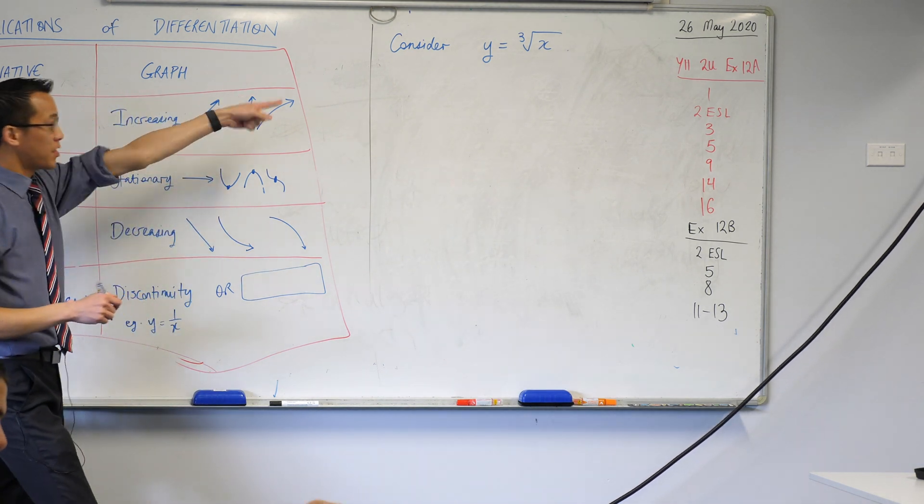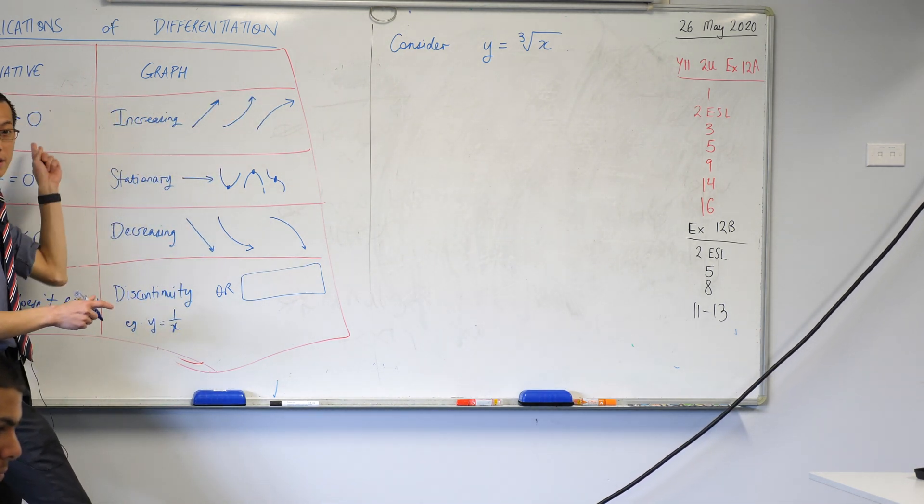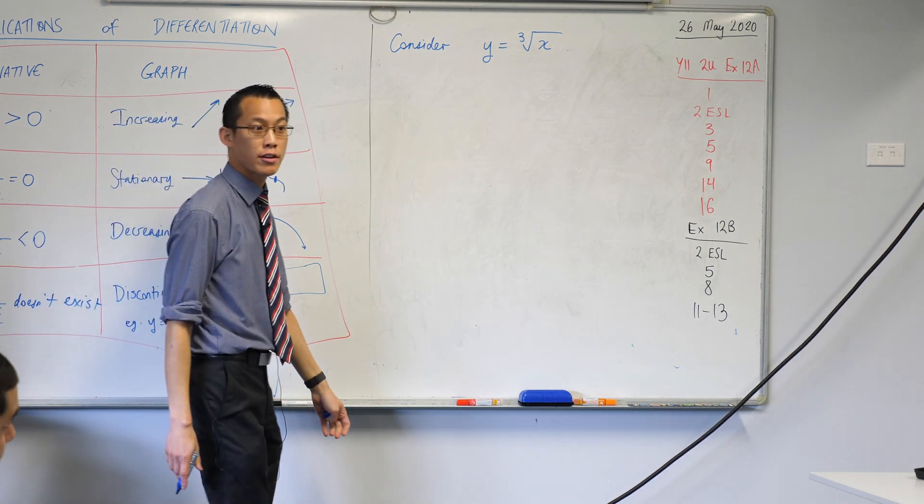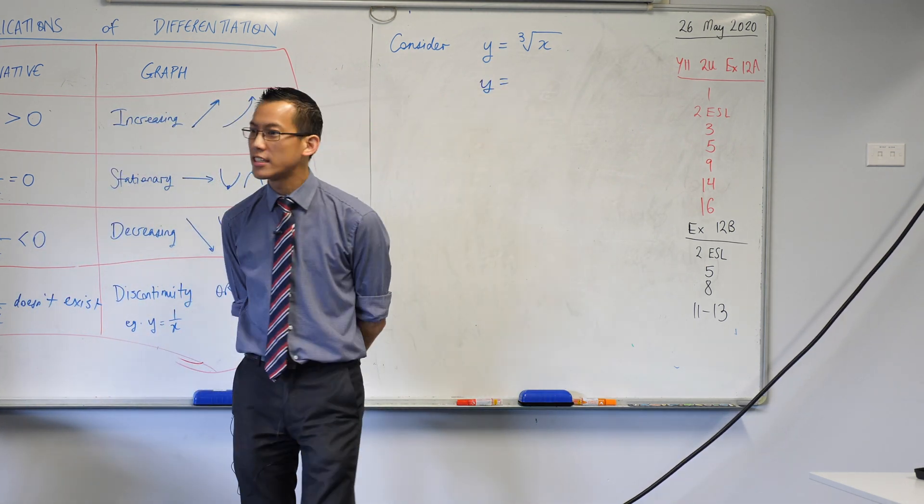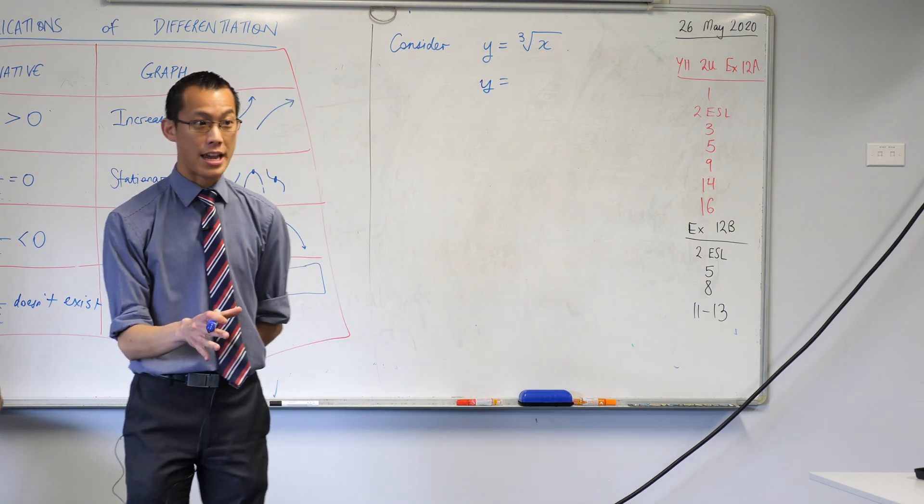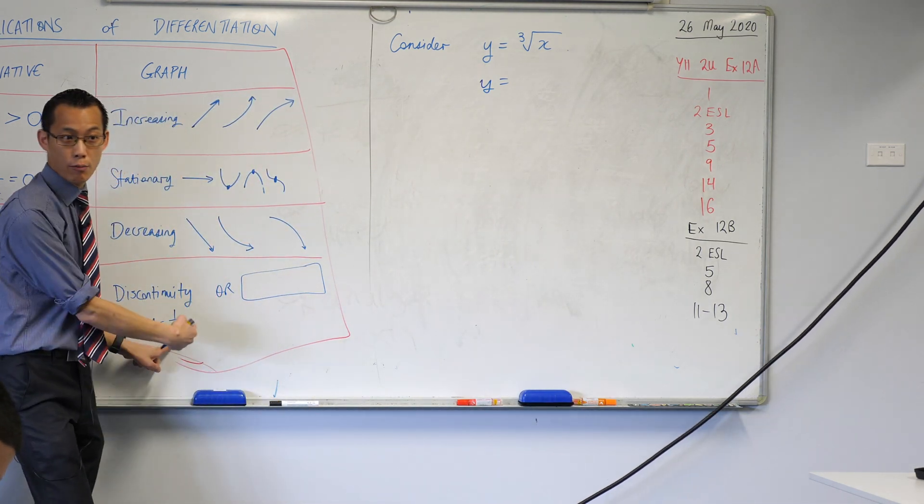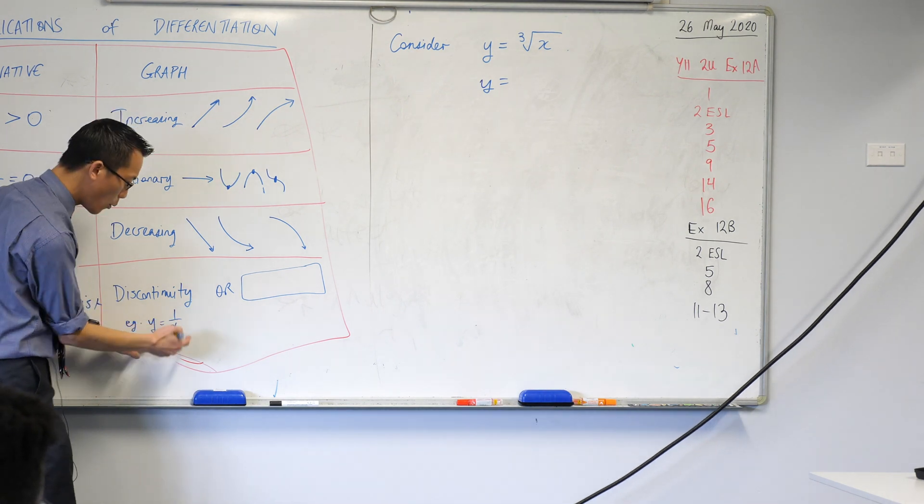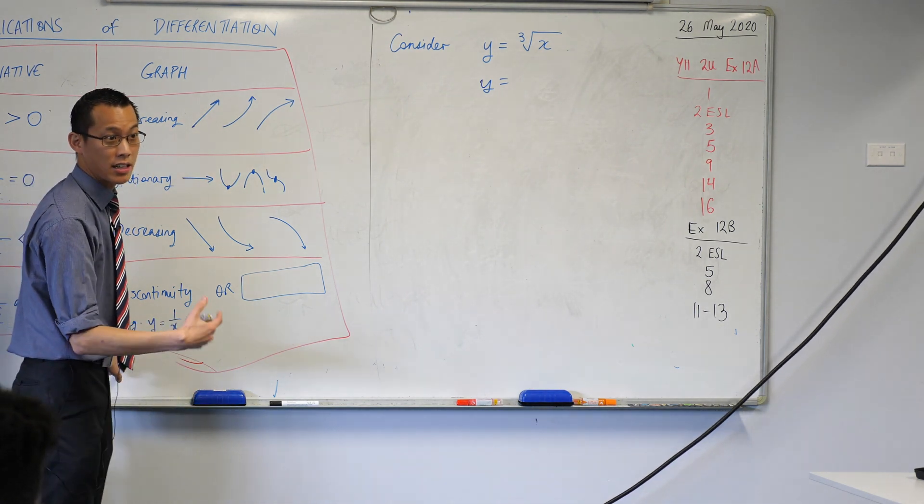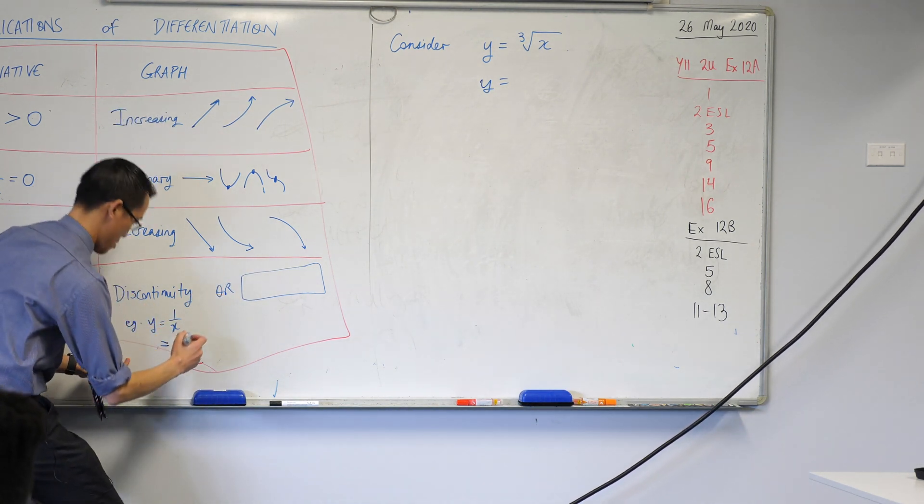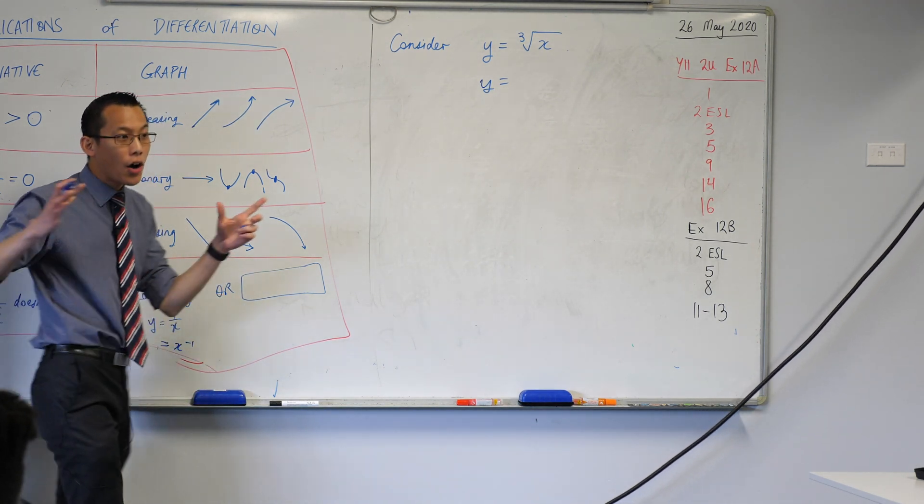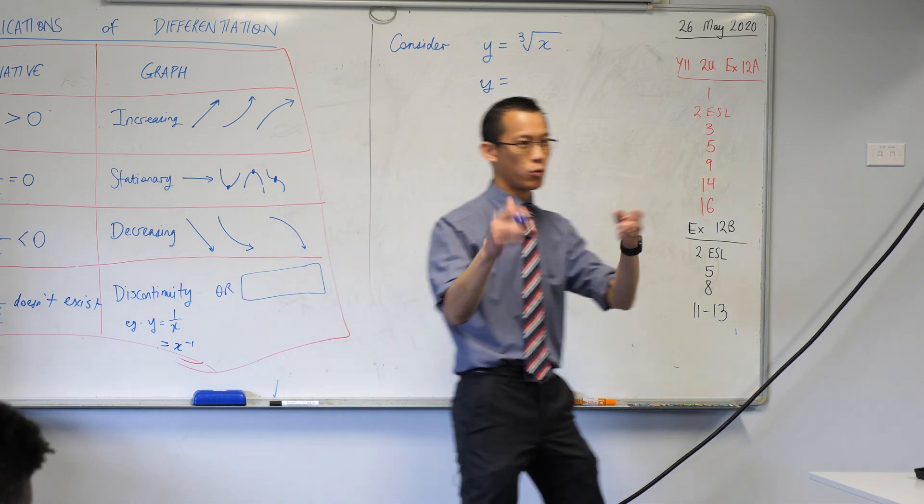If we wanted to understand what this thing is doing on the basis of calculus, our instinct is to differentiate it. The only problem is, in its current form, it's not written in a nice way to differentiate. In much the same way that this is not written in a nice way to differentiate. What would we do to rewrite this to make differentiation more straightforward? x to the power of negative one. And you're like, I'm in index form now and I just use my normal rules and off I go.